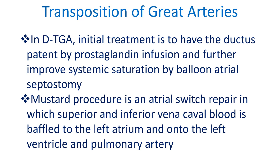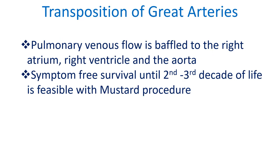The Mustard procedure is an atrial switch repair in which superior and inferior vena caval blood is baffled to the left atrium and onto the left ventricle and pulmonary artery. Pulmonary venous flow is baffled to the right atrium, right ventricle, and the aorta. Symptom-free survival until the second to third decade of life is feasible with the Mustard procedure.